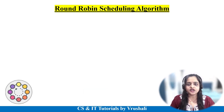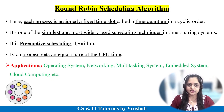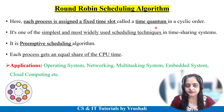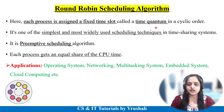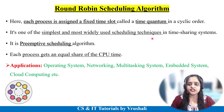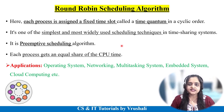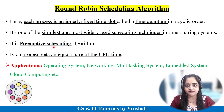Today from the scheduling algorithms we will discuss round robin. I am giving you a quick overview. It is one of the most simplest and most widely used scheduling techniques because it is based on the time quantum. Time quantum means the operating system gives a fixed time slot to a particular process for execution. In this algorithm, every process gets an equal share of CPU time, which is why it is also called a preemptive scheduling algorithm.